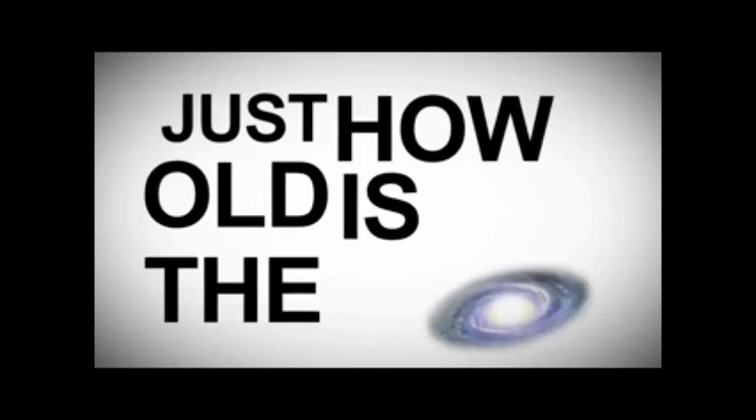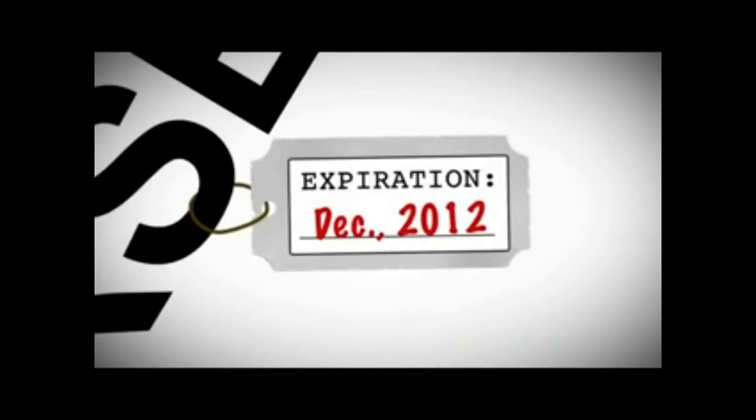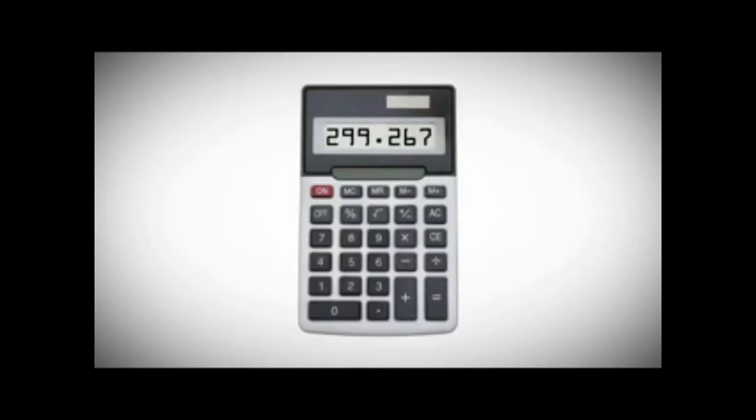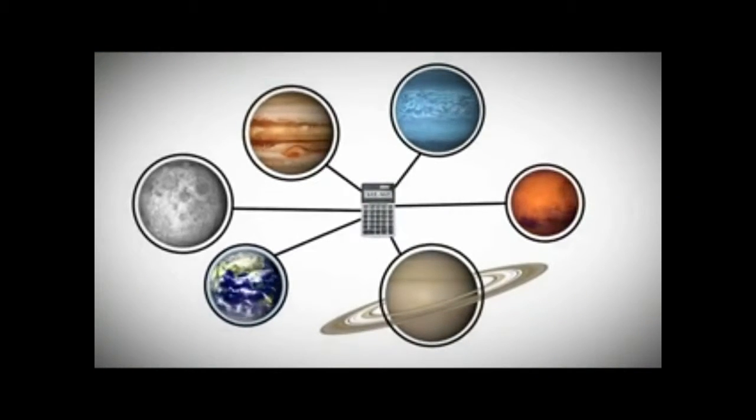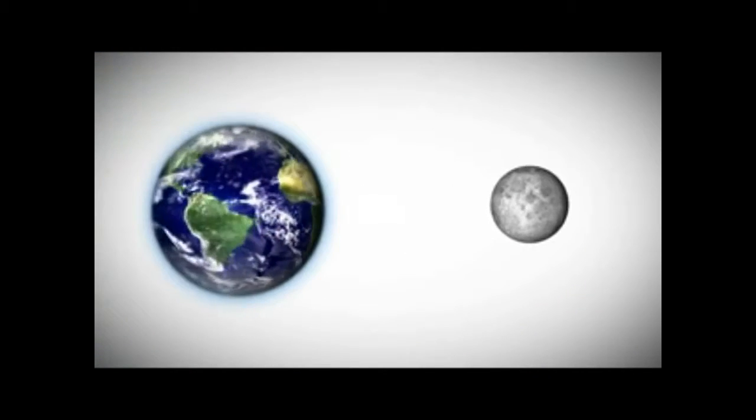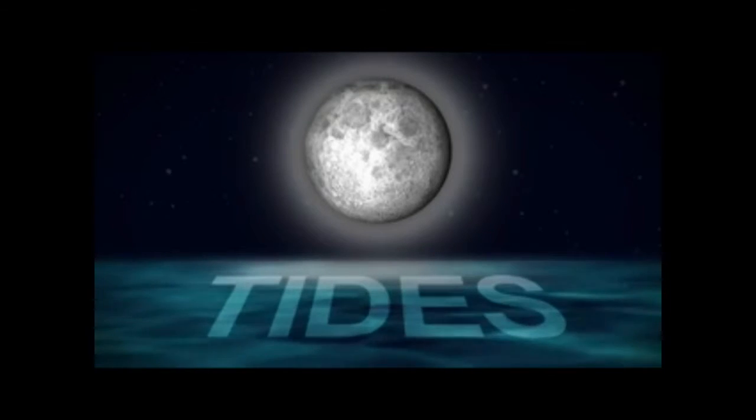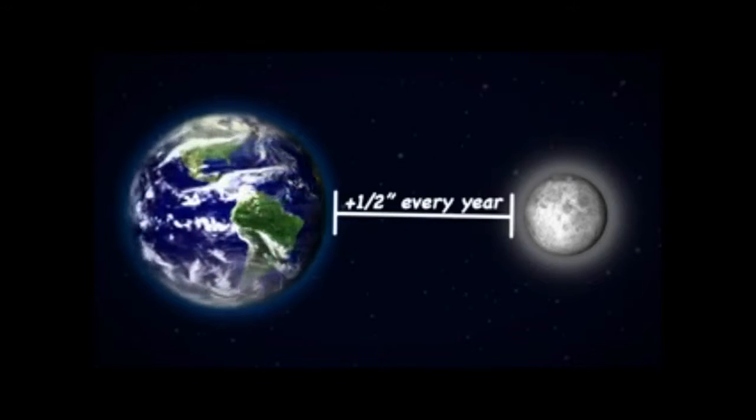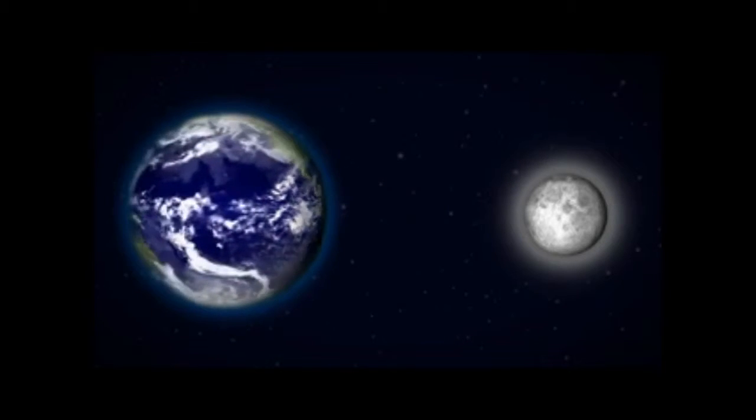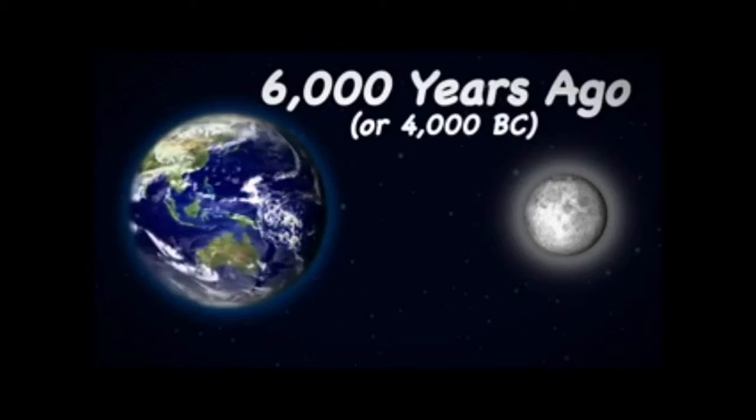Just how old is the universe? Well, it doesn't have an expiration tag, but we can make some estimates by looking at things in our universe like the moon. As the moon orbits the Earth, its gravity pulls on the oceans causing tides. And as the tides pull on the moon, they cause it to move about an inch and a half away from the Earth each year. That means that 6,000 years ago, the moon would have been about 800 feet closer to the Earth. Not a problem.